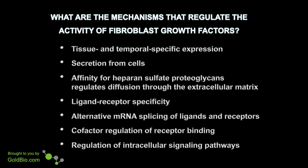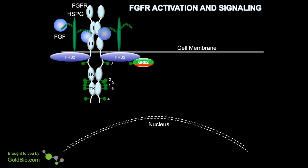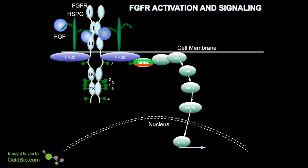Lastly, the regulation of the intracellular signaling pathways is critical to regulating the activity of this pathway. If we look at the FGF receptor complex, we can see that after activation of the receptor and dimerization, there's a sequential autophosphorylation of the tyrosine kinase domains. This activates the tyrosine kinase domain and leads to phosphorylation of the adapter protein FRS2. The phosphorylated FRS2 then binds the adapter protein GRAB2, and this activates the RAS-RAF MAP kinase pathway and downstream transcription of genes.